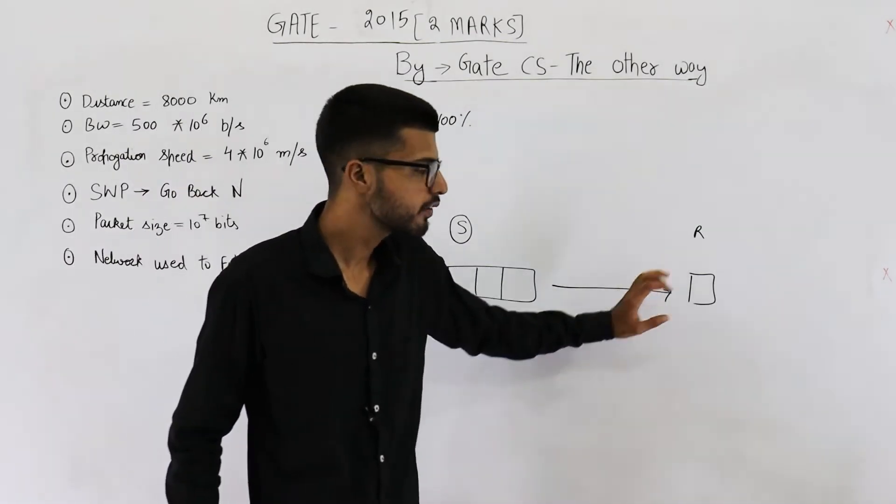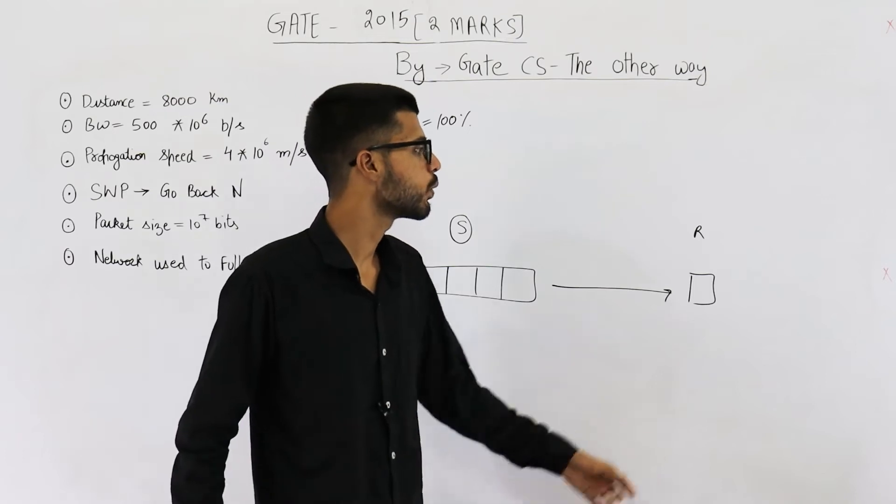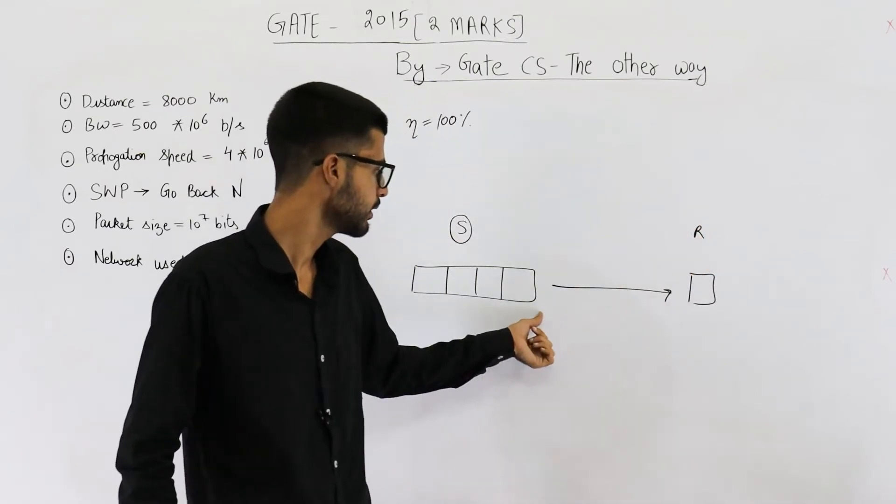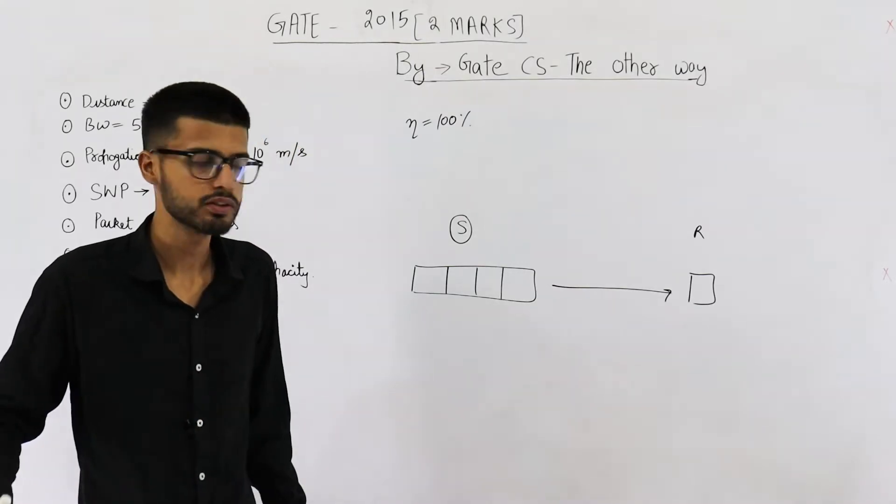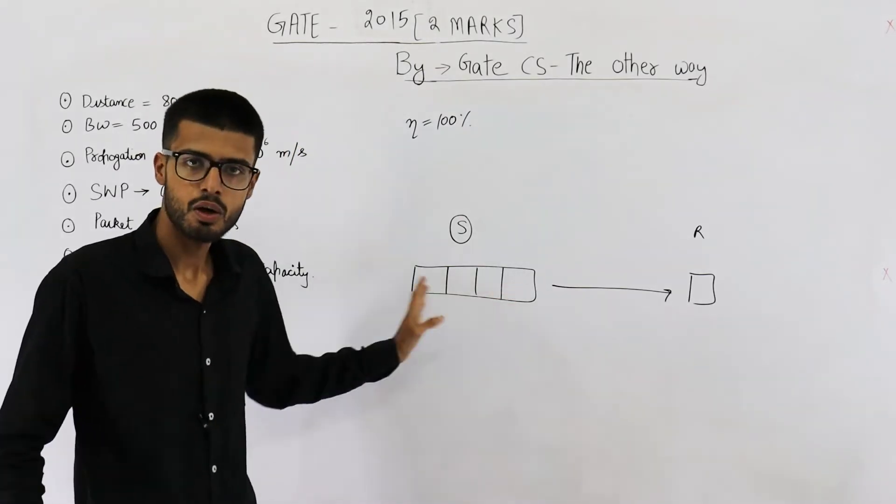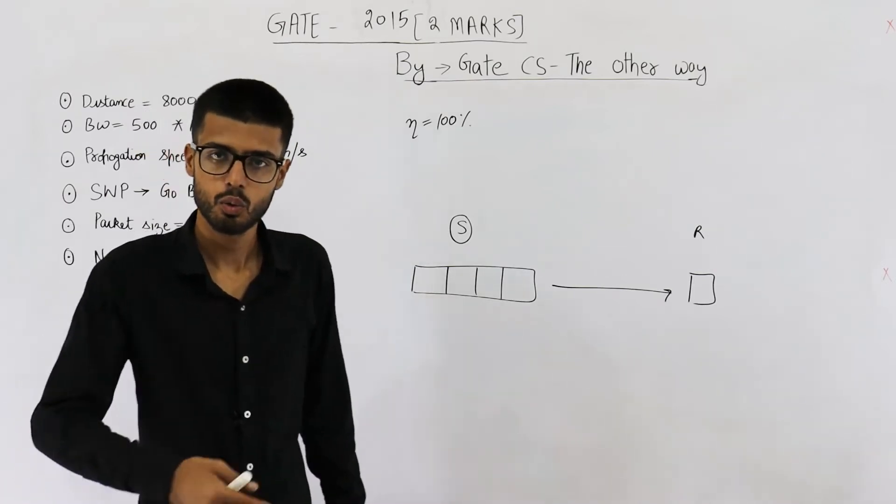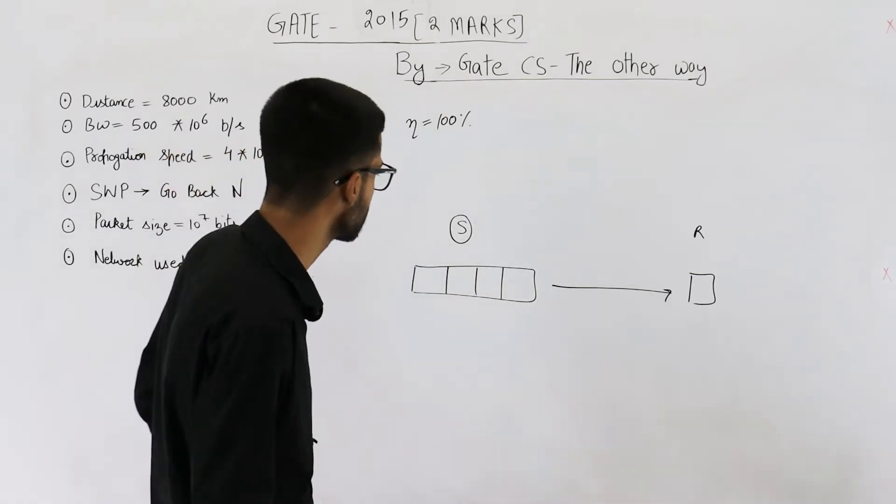Because even if one packet is lost in the way, all the subsequent packets that receiver will receive will be discarded. That means entire window is kind of lost. First one is lost, all others are discarded. So we have to retransmit the entire window. Go back N - all the N packets will be retransmitted.